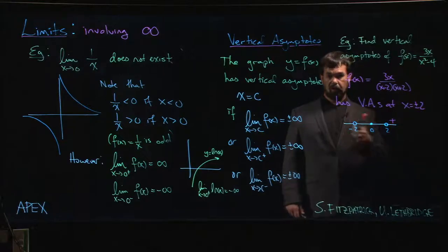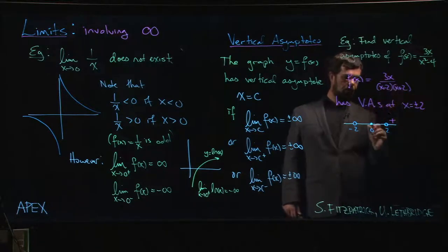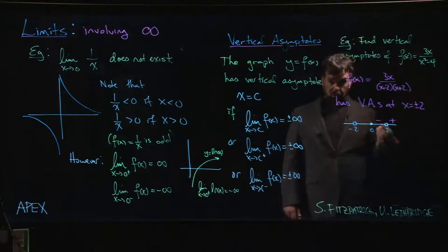In this interval, we might test at, say, x equals 1. Or you might realize that when you cross 2, this factor is going to change sign, but the other ones are not. So either way, you realize that now this is going to be negative, the other two are still positive. So overall, it's negative.